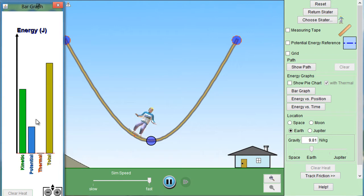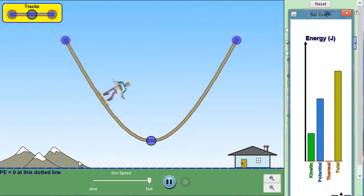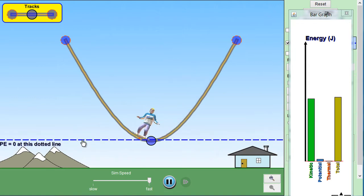His potential energy never goes all the way to zero because look at where we have our potential energy reference for zero. We are saying that PE equals zero at the ground. If we want to make PE equals zero at the bottom of the ramp, then we can just slide it up.